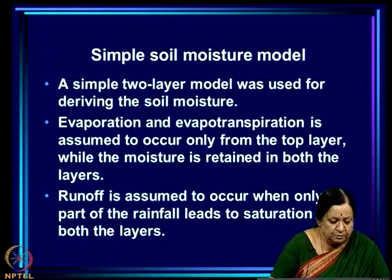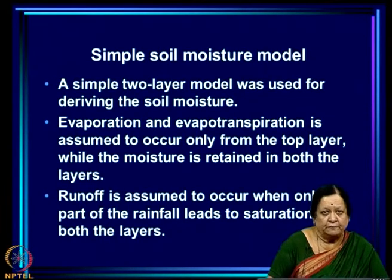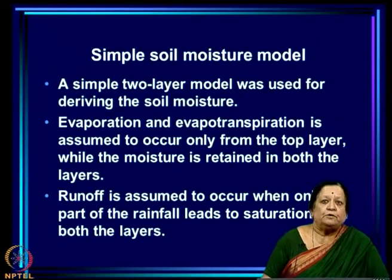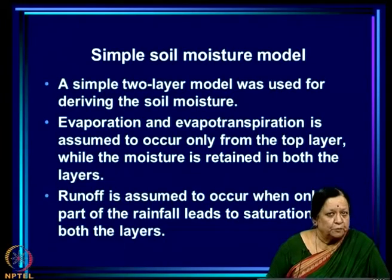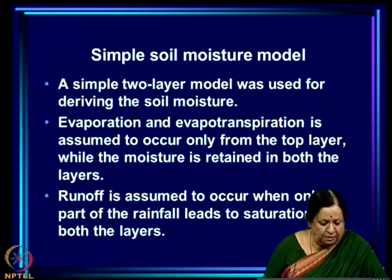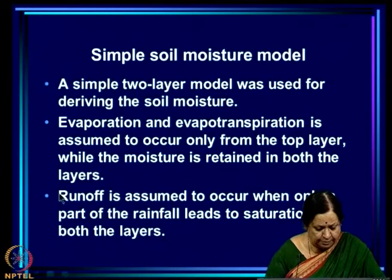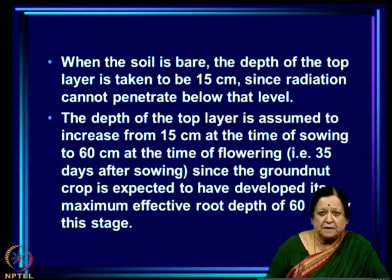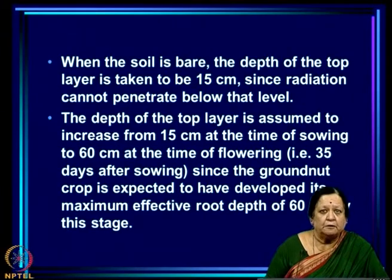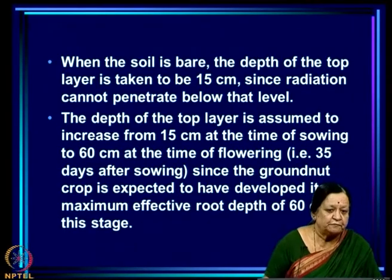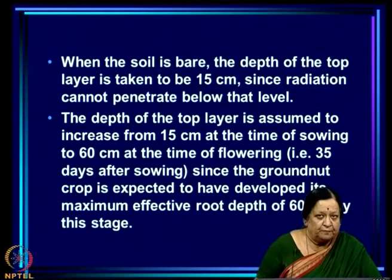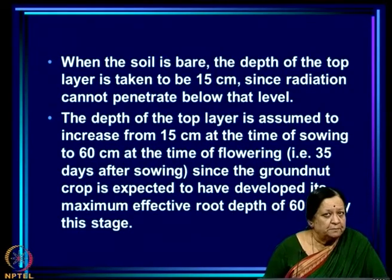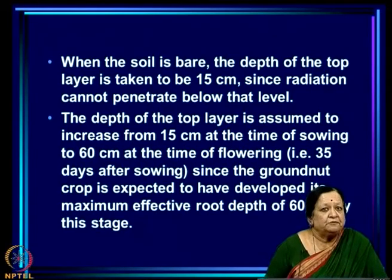What we did was develop a simple two-layer model for deriving soil moisture. Evaporation and evapotranspiration is assumed to occur only from the top layer, while moisture is retained in both layers. Runoff is assumed to occur only when rainfall leads to saturation of both layers. When the soil is bare, the depth of the top layer is taken to be 15 cm because radiation cannot penetrate below that level — this is the layer that interacts with the atmosphere.